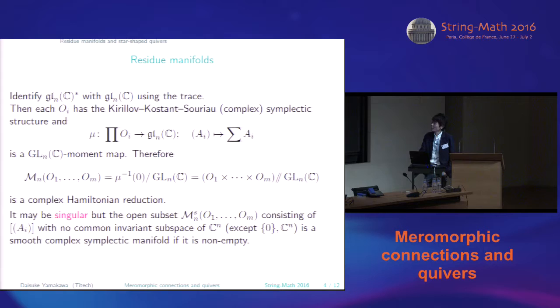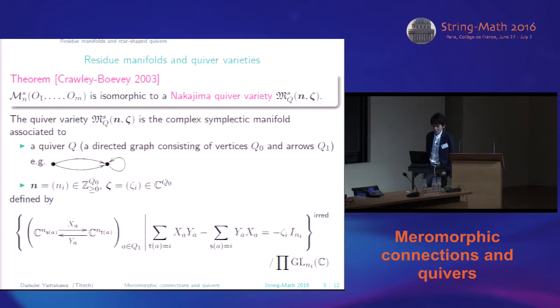Therefore the space in the previous slide is just a complex Hamiltonian reduction by the action of GLN. But it may be singular. So I want to take some open subsets. Consider the open subsets consisting of tuples of Ais with no common invariant subspace of C^N, except the trivial two subspaces. Then this open subset is smooth and so complex symplectic manifold if it is non-empty.